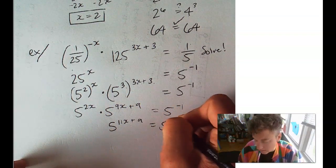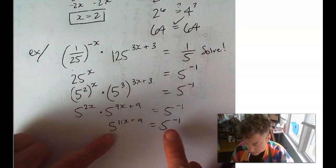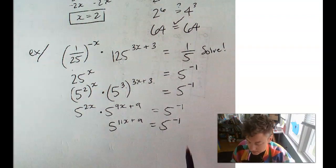So, we add these exponents. 2x plus 9x plus 9 is going to be 5 to the 11x plus 9 equals 5 to the negative 1. We did the hard part. We got our equation to be base to exponent equals that same base to exponent. Now, we just set these exponents equal to each other.